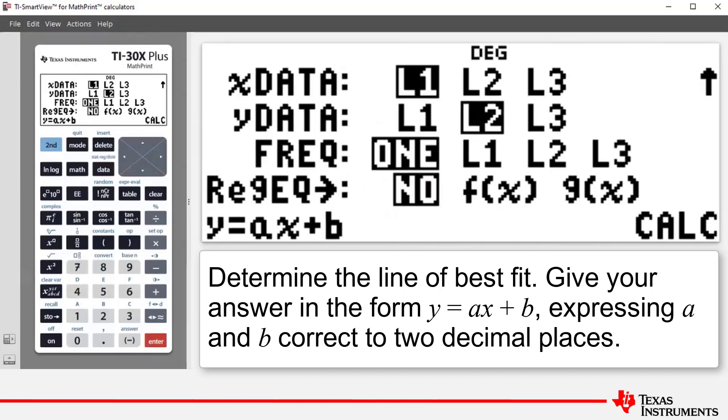Now, femur lengths are represented by X and they're in L1. So that's fine. Humerus lengths represented by variable Y and they're in L2. So that's fine. The frequency is one.